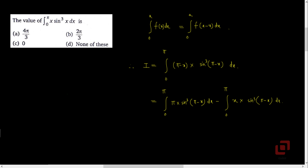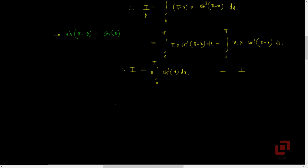We recall the property of allied angles which says sin(pi minus x) equals sin(x). Using this property, the second integral becomes integral from 0 to pi of x into sin cube(x) dx, which is nothing but the original integral I. So I equals integral from 0 to pi of pi into sin cube(x) dx minus I, therefore 2I equals pi into integral from 0 to pi of sin cube(x) dx.